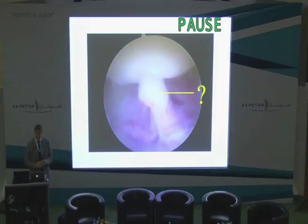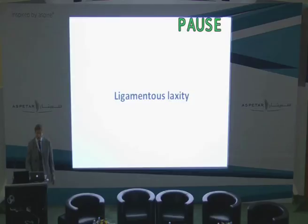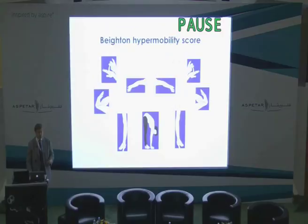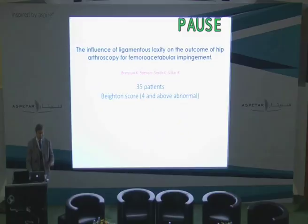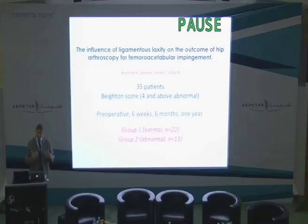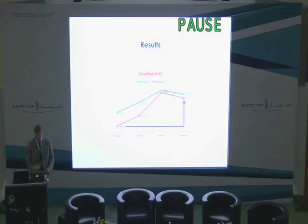Now, enter ligamentous laxity — I'm putting this almost as an aside, even though it is extraordinarily important. The Beighton score is something I think we all use copiously, but how does it influence stability, and as a hip arthroscopist, how does it influence my results? We looked at this in the UK with 35 patients, taking a Beighton score of 4 and above as abnormal, followed up to about one year. We have two groups: group 1, normal, and group 2, abnormal. We find that both groups improve. The perception that those with ligamentous laxity do worse does not appear to be correct — it simply takes them a little bit longer, but both groups get there in the end.